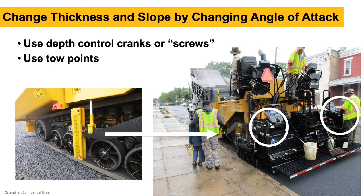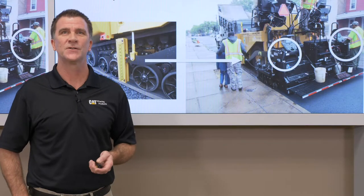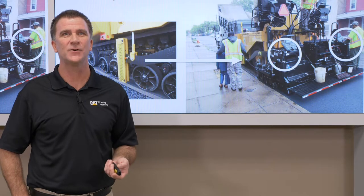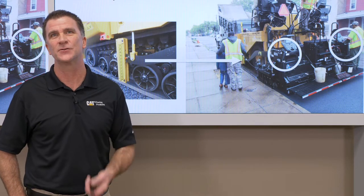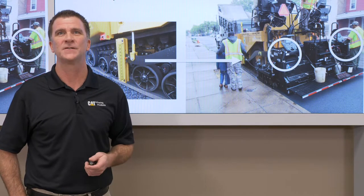If the angle is too low, it increases the shear factor and wear and we'll see an open mat texture. So angle of attack is very critical. To change thickness and slope, we change the angle of attack using the depth cranks — sometimes called the screws — on the screed, one on the left side and one on the right side. Another way to change mat thickness is to use the toe point controls, raising or lowering toe points using buttons on the screed control panel.